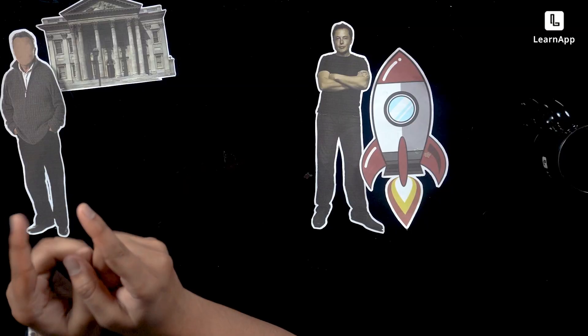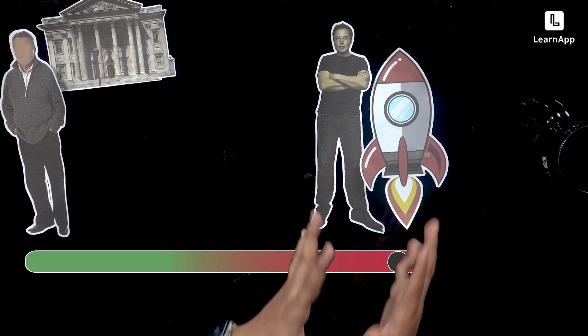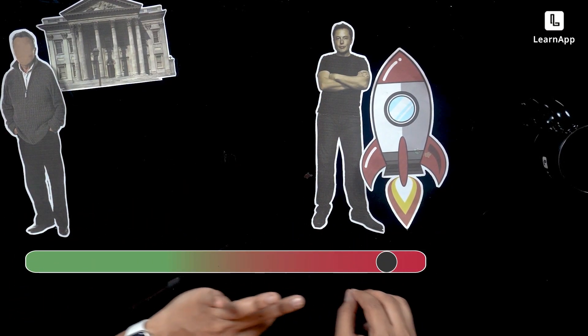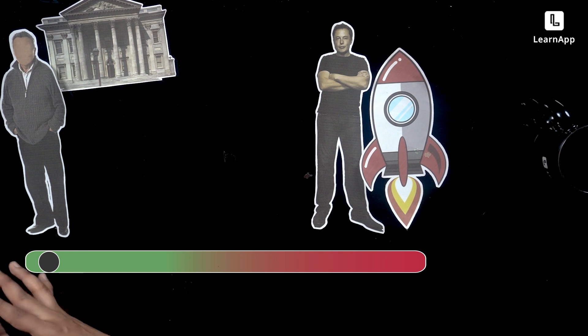Why I'm telling you this story is very simple: who are you? Are you super risky, like Elon? Or are you someone who does not like risk at all, like Sharma ji?